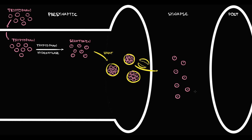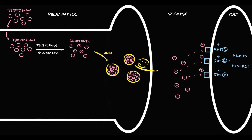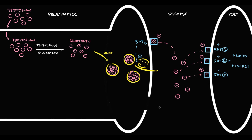Serotonin molecules enter the synapse. On the postsynaptic neuron we have numerous serotonin receptors. Once serotonin appears in the synapse, most molecules immediately bind to and activate serotonin receptors, which improves mood and increases energy. Some serotonin molecules bind to the serotonin 1B receptor on the presynaptic neuron, which is an autoreceptor. With activation, this receptor inhibits the exocytosis of serotonin vesicles into the synapse, providing reciprocal regulation.